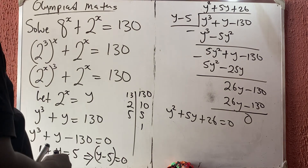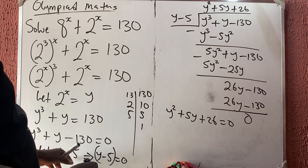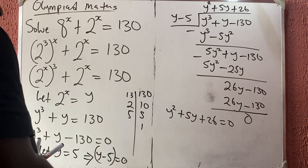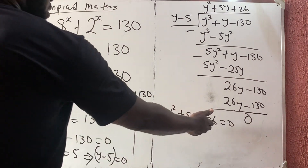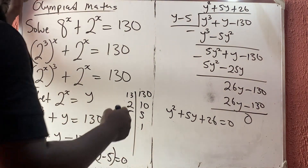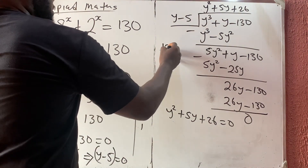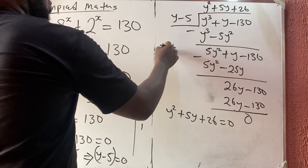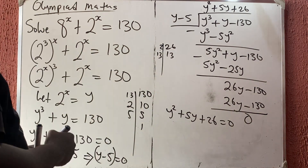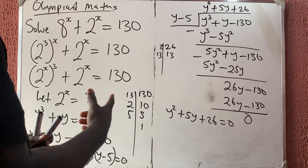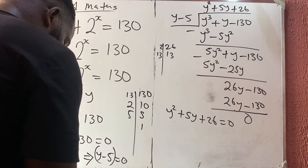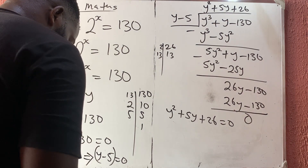We've found the first solution: y = 5. Now looking at the quadratic factor y² + 5y + 26 = 0, it is not factorisable — the only factors of 26 are 2 and 13, and there's no combination that works. So we'll use the quadratic formula.